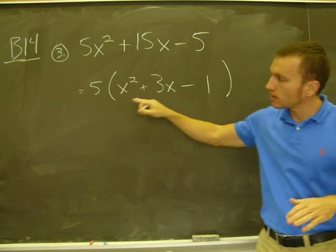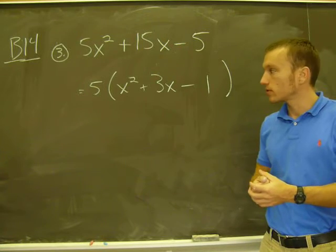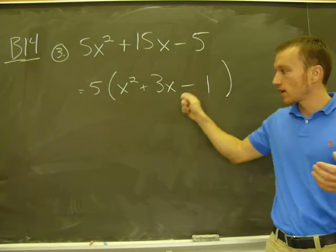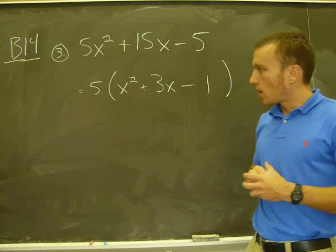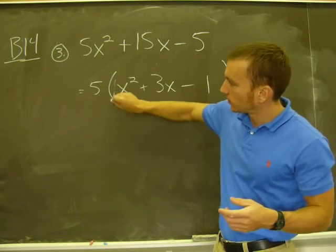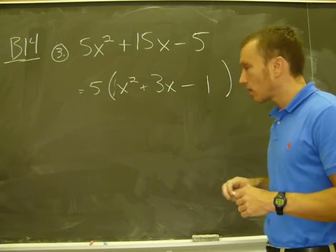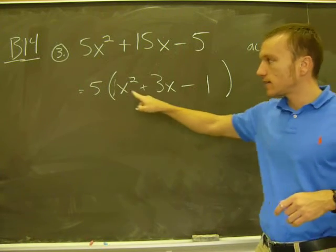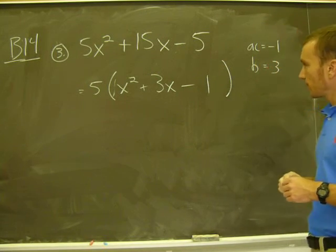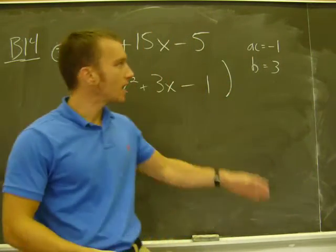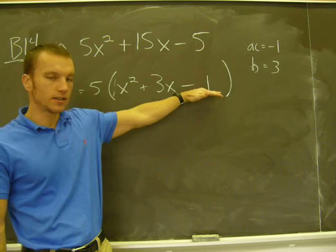So that's the first step — look for the greatest common factor. In this case there is one, it's 5. I factored out and I'm left with this. Now, you should recognize this as one of those second-degree three-term polynomials, which typically we can factor as the product of two linear factors, if they factor. So I have to ask myself, does that factor further? What we need to do here is find two numbers that multiply together to give you negative 1 — that's using the AC method that your book discusses. The AC would be negative 1, and your B term here is 3.